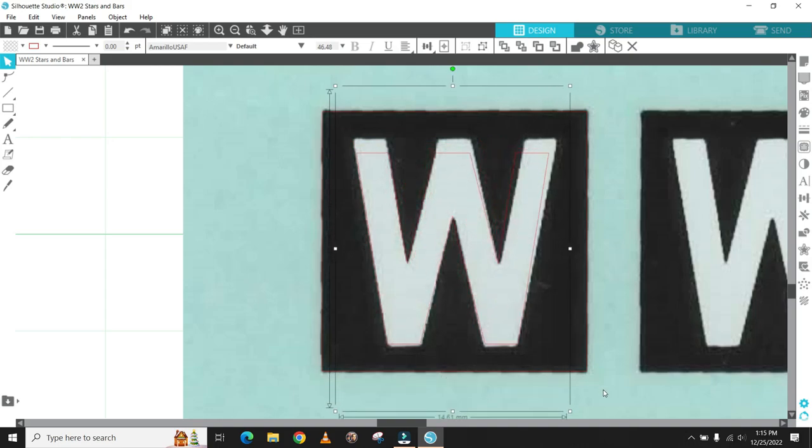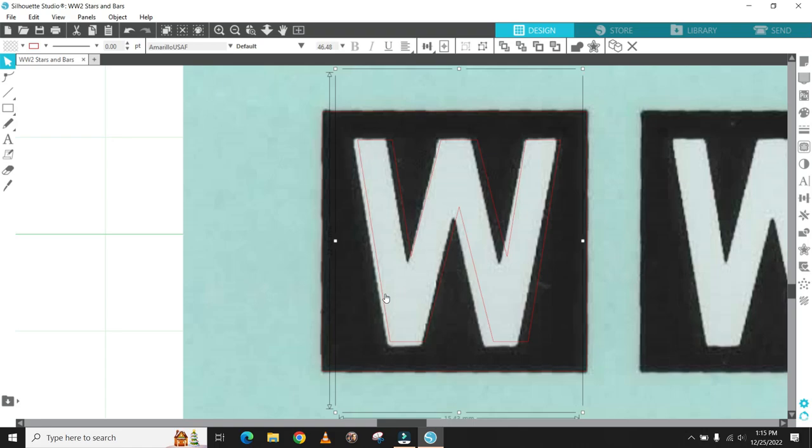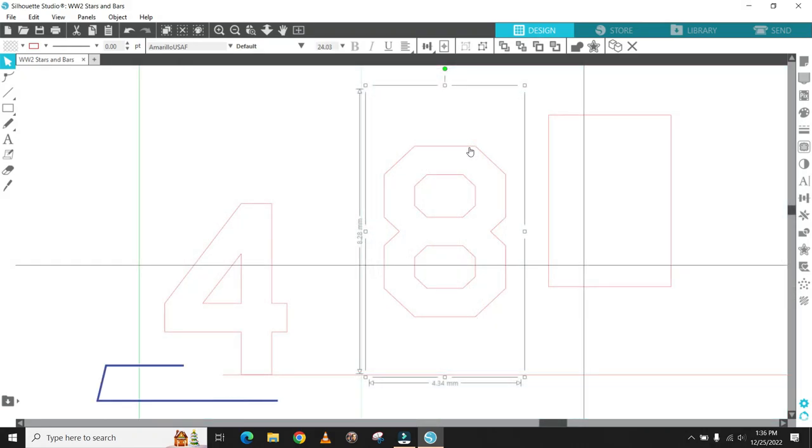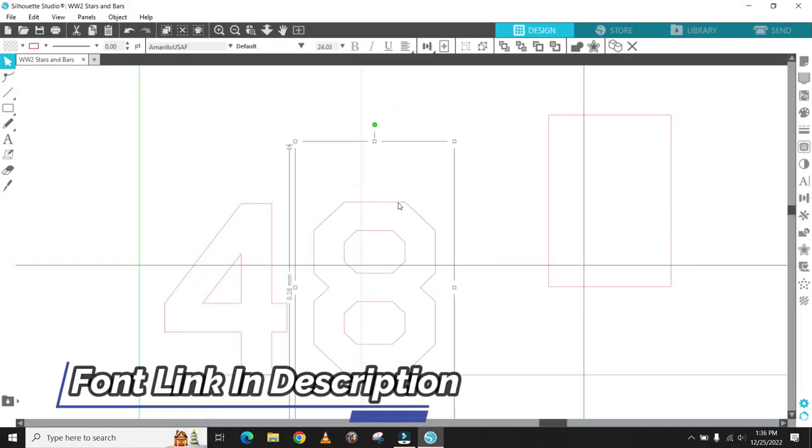I repeat this process for other markings like the W for the tail of my B-17. Using a square and a font I found that mimics World War II lettering, I am able to get a very close approximation for the tail letter. I have provided a link to this font in the description for the World War II lettering.